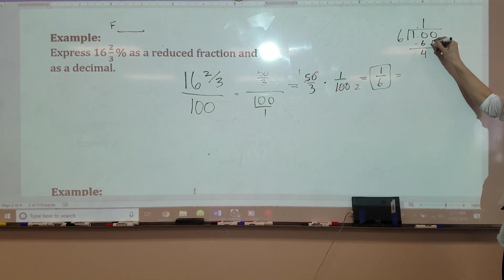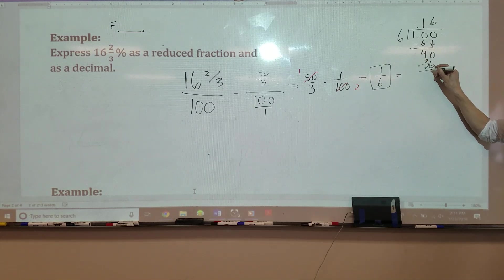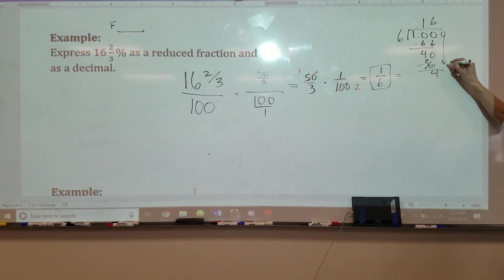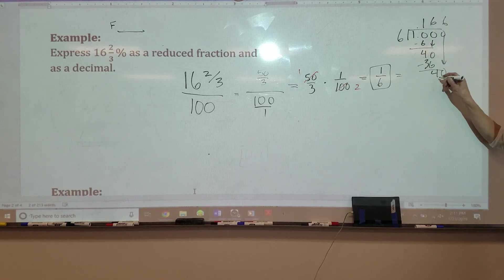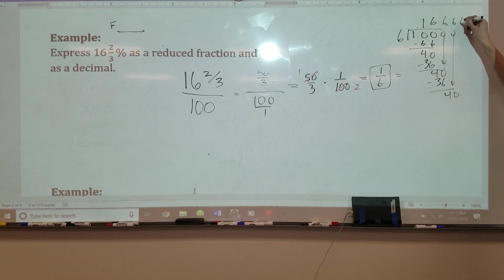Then we'll go once into 10. 6. Subtract 4. Bring down the 0. It'll go 6 times into 40. 36. We subtract. We get 4. We bring down another 0. Oh. 6 again. 36. Subtract. We get 4. Bring down another 0. And we see this pattern, right?